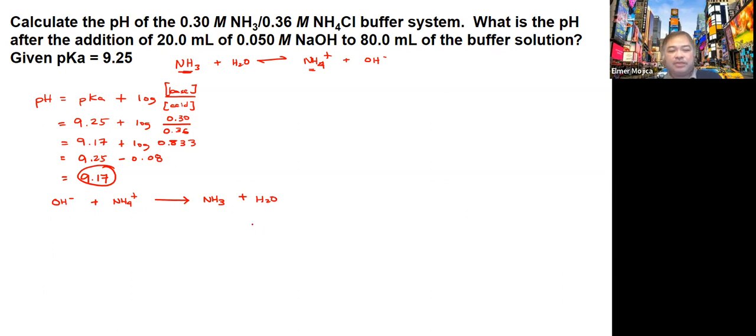We're going to determine how many moles is 0.05 times 20 mL. So 0.05 moles per liter times 20 mL divided by 1,000 mL per liter. 20 divided by 1,000 times 0.05, that would be around 0.001.